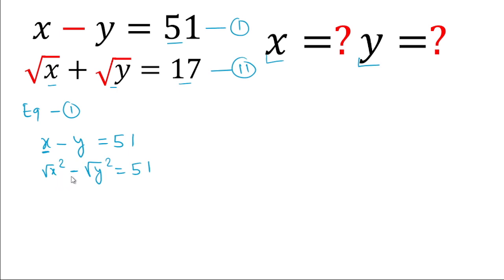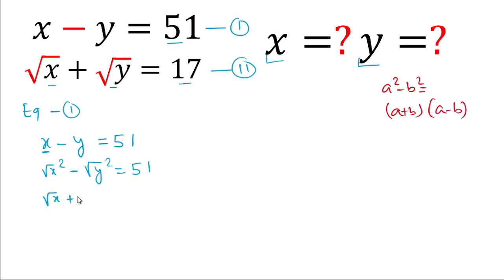If we look at it, it is in the form of a squared minus b squared. We'll apply the formula: a plus b multiplied by a minus b. So we'll write: under root x plus under root y, multiplied by under root x minus under root y, is equal to 51.